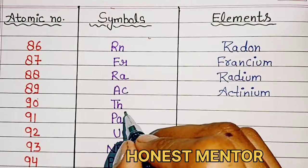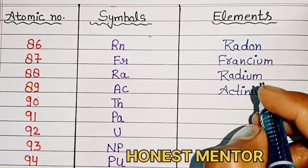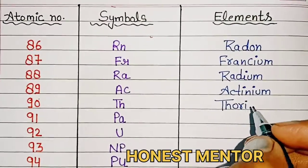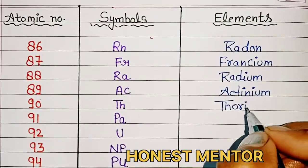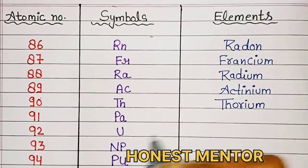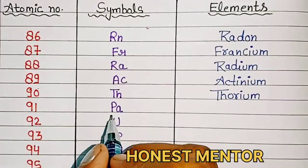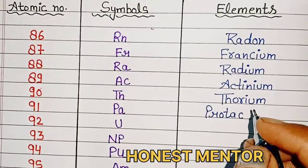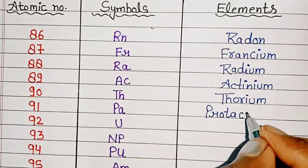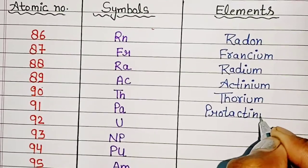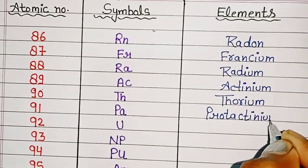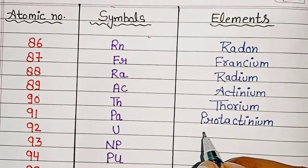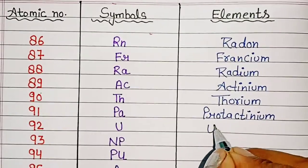90, Th, Thorium. 91, Pa, Protactinium. 92, U, Uranium.